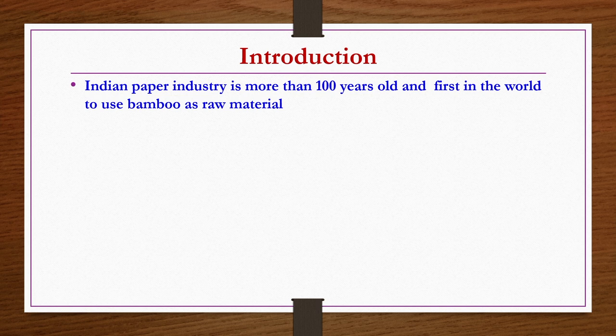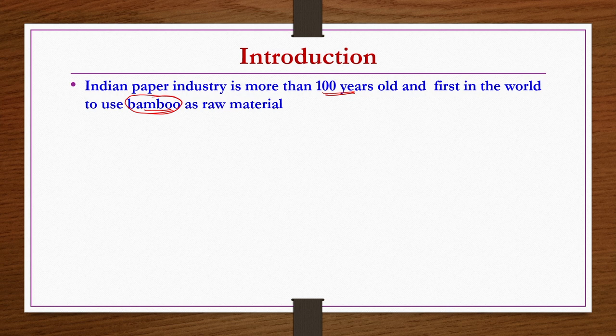Indian paper industry is more than 100 years old and is the first in the world to use bamboo as raw material. Different types of fibrous materials are used as raw material for pulp production. Bamboo is great because it is the only one that gives long and strong fibers to get cellulose. If fibers are long and strong, high in cellulose content and low in lignin content, the quality of the paper is going to be better.